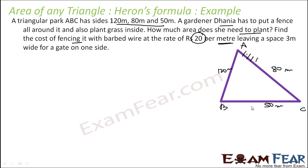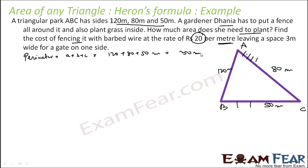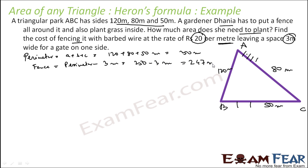Leaving a space of 3 meters wide for a gate on one side. First, let's find the perimeter. Perimeter is the sum of all sides: A plus B plus C, that is 120 plus 80 plus 50 meters, which equals 250 meters. The fence length is the perimeter minus 3 meters for the gate, that is 250 minus 3 = 247 meters.